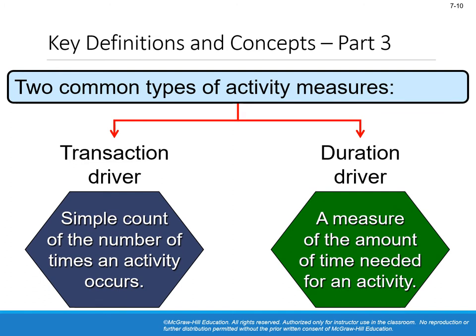There are two common types of activity measures: transaction drivers and duration drivers. This is not that important — you just need to know that some activities are driven by the number of transactions and some are a function of time.